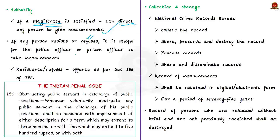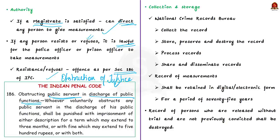Such resistance or refusal will amount to penal action under section 186 of the Indian Penal Code. You would have heard the term 'obstruction of justice.' Section 186 deals with obstructing a public servant in the discharge of public functions. If there is such obstruction, that person can be punished with imprisonment for a term up to three months. So if the magistrate has ordered you to give measurements and you refuse, it will be obstruction of justice under section 186 of IPC.